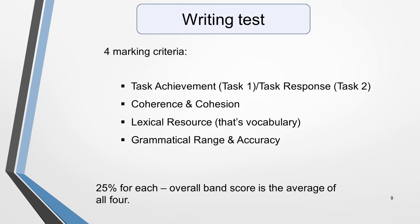Now for the writing test. The writing test has two parts. It's marked by an examiner who awards a band score based on these four criteria: task achievement and response, coherence and cohesion, lexical resource and grammatical range and accuracy. Each criterion carries equal weight. An average is taken of the four scores to give the overall band score.